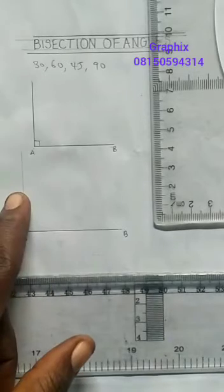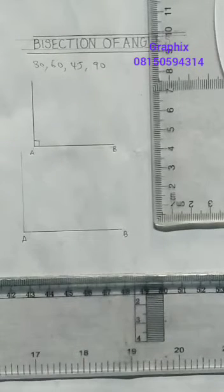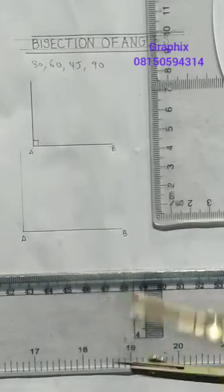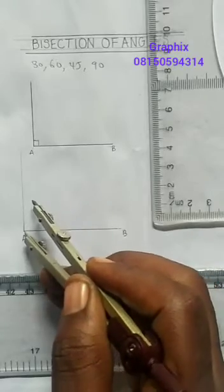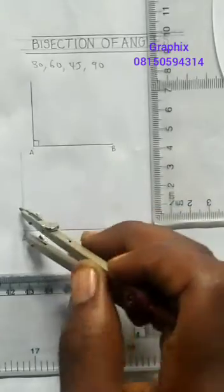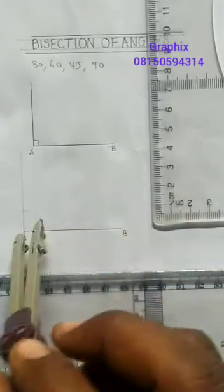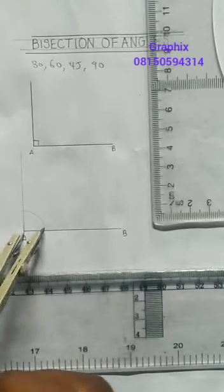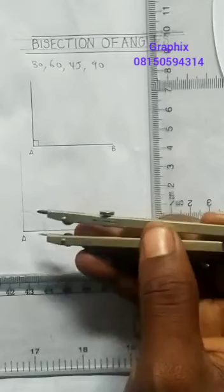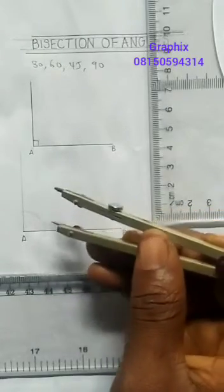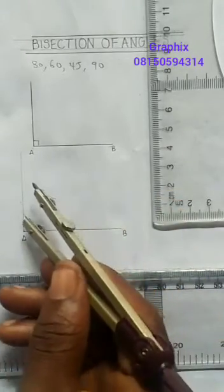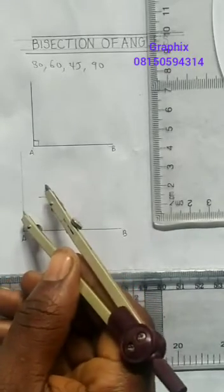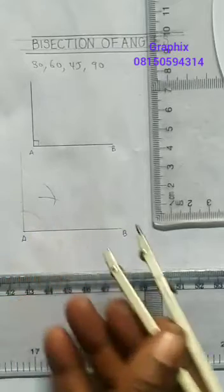I am drawing with faint line. Then I am going to use my compass at any reasonable radius. I will place it at this edge A here and draw my arc to cut through. When it cuts through, with the same radius, I place it at this point that it cut the horizontal line and strike an arc. With the same radius, I place it here also and strike the other arc.